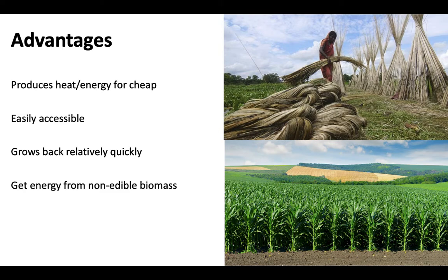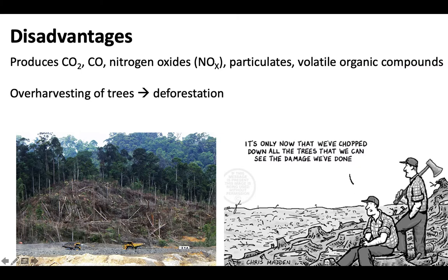You can also get energy from biomass that you otherwise wouldn't be able to eat. You grow a corn crop, pick the corn and eat it — but what about all the stalk that's left over? You can cut that down and burn it. The disadvantages, however, are that it produces carbon dioxide, carbon monoxide, nitrogen oxides, particulate matter, and volatile organic compounds. These are things we'll cover in more detail in the next unit, but it can produce a lot of air pollution.